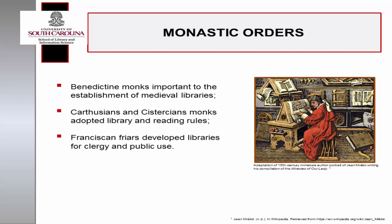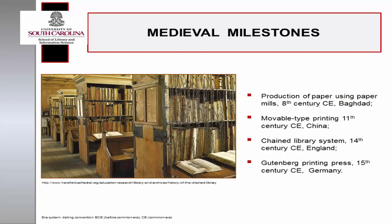Monks of the Carthusian and Cistercian orders adopted library and reading rules, and Franciscan friars developed libraries for clergy and public use. As libraries were open to users outside of religious or learning centers, chaining systems were implemented as measures for collections management to secure text and prevent theft. Other innovations during the medieval period included the use of the paper mill in the 8th century CE, movable type printing systems in the 11th and 14th centuries CE, and the Gutenberg printing press in the 15th century CE.